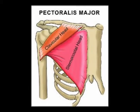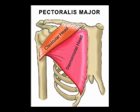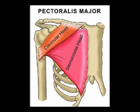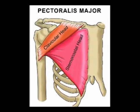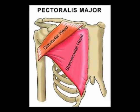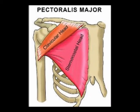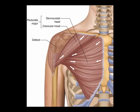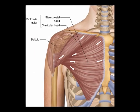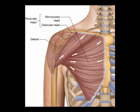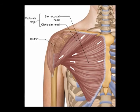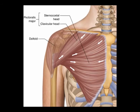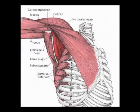Again, the pectoralis major muscle has two heads: the clavicular head and the sternocostal head. The concentric actions of the pectoralis major muscle are shoulder flexion, shoulder adduction, and shoulder medial rotation.